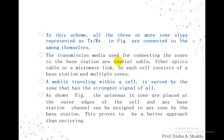Each cell consists of a base station and multiple zones. A mobile traveling within a cell is served by the zone that has the strongest signal. As shown in the figure, the antennas in the zone are placed at the outer edge of the cell, and any base station channel can be assigned to any zone by the base station.